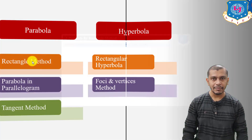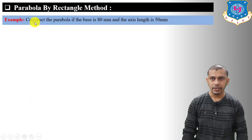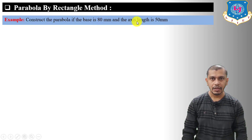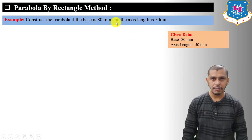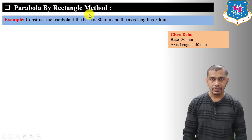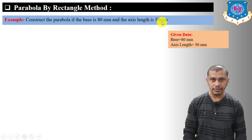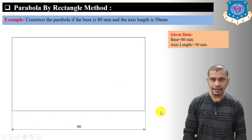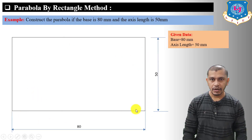Let's move on to the rectangle method to construct the parabola. The problem is: construct the parabola if base is 80 mm and axis length is 50 mm. First of all we have to draw a rectangle having length 80 mm and width 50 mm.